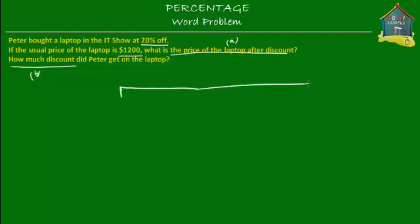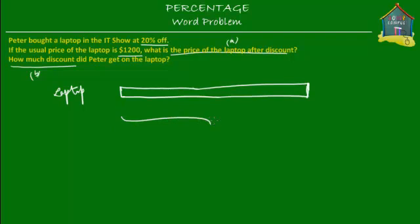Let's say this is the model that represents the usual price of the laptop. So if this is the usual price of the laptop, let's call it 'laptop.' Then this entire thing must be equal to $1,200, because that's the usual price of the laptop. And what we do know is Peter got 20% off on the laptop.